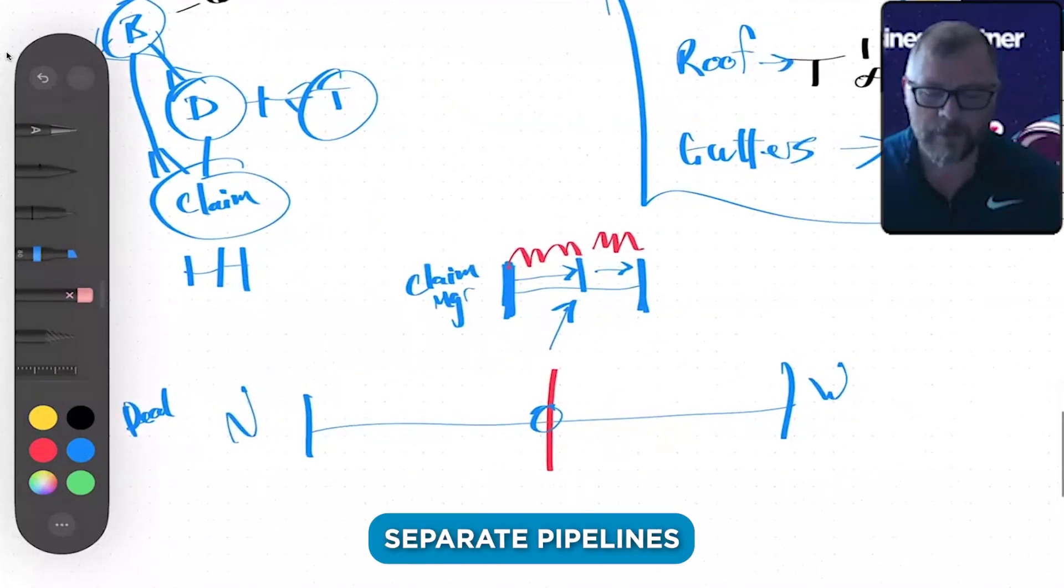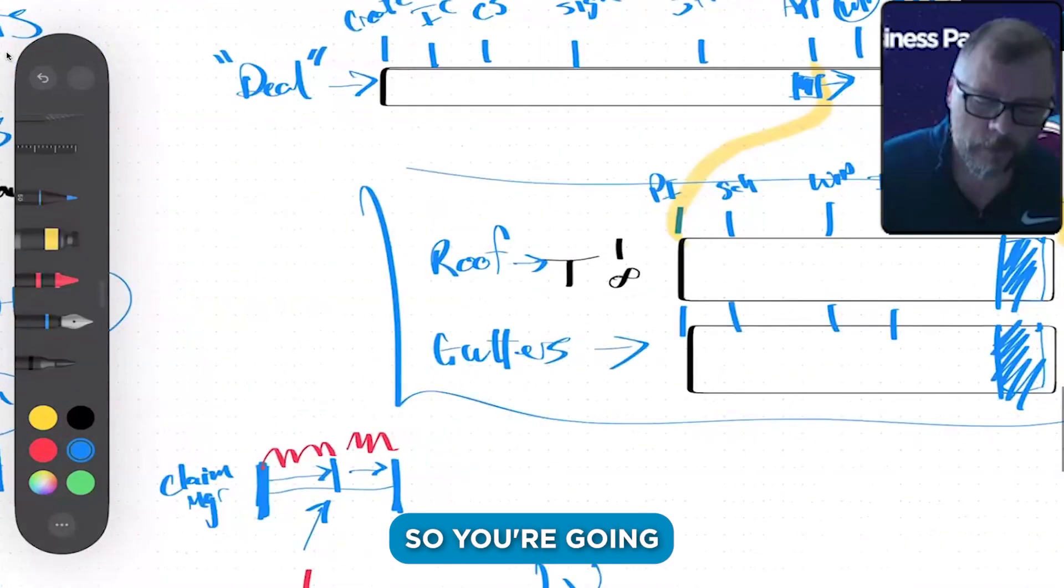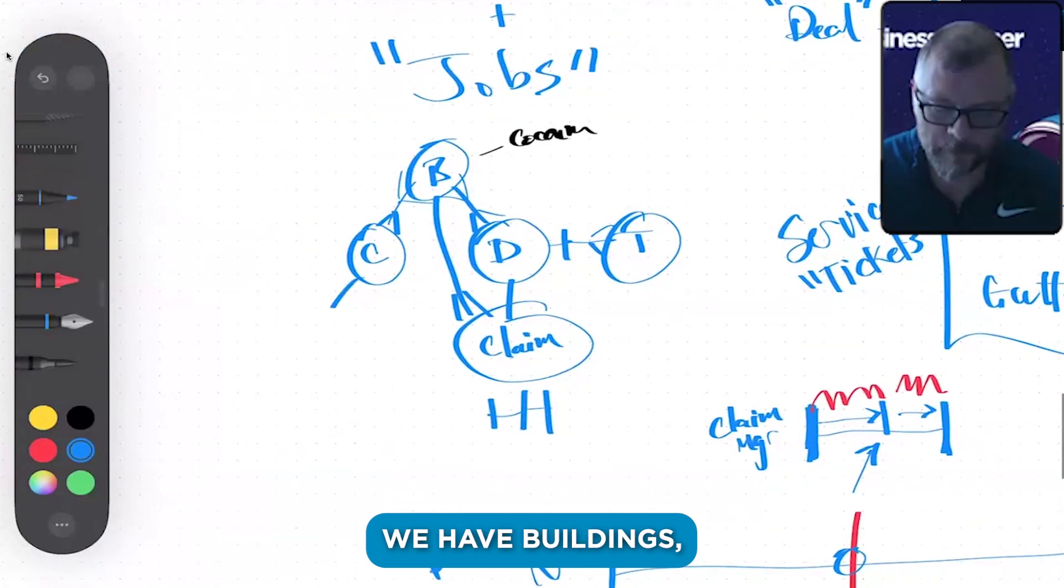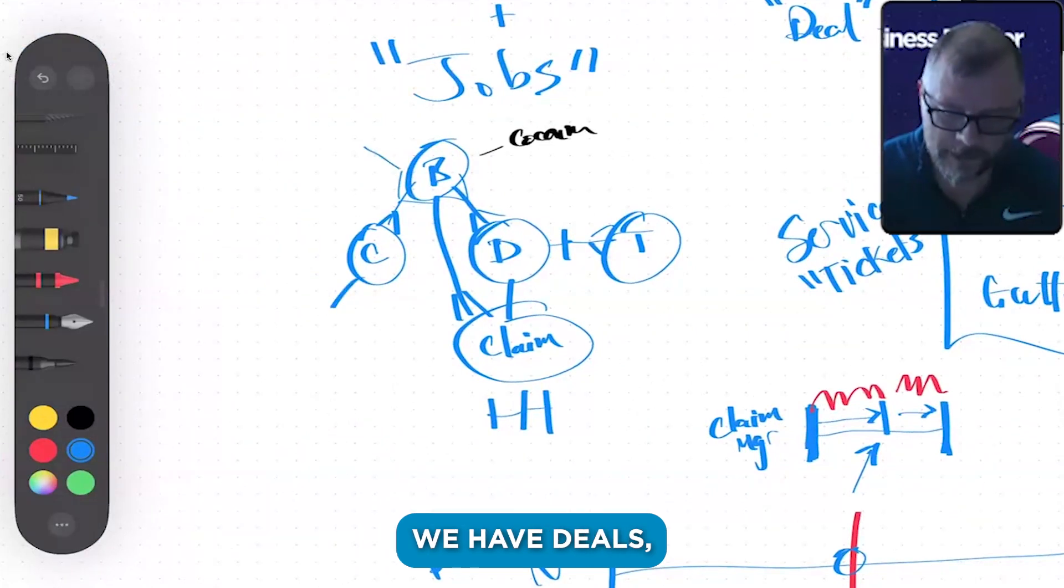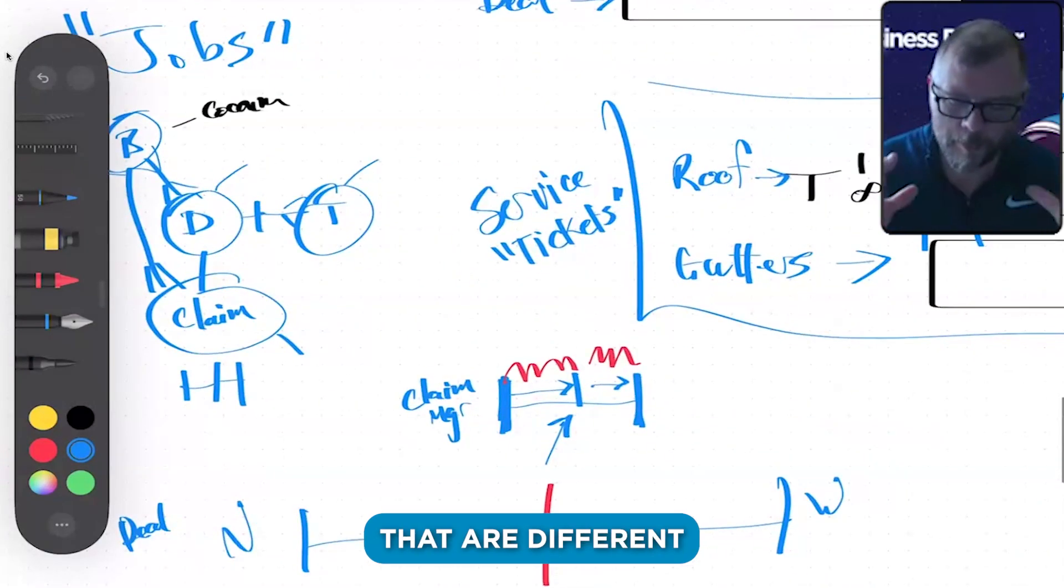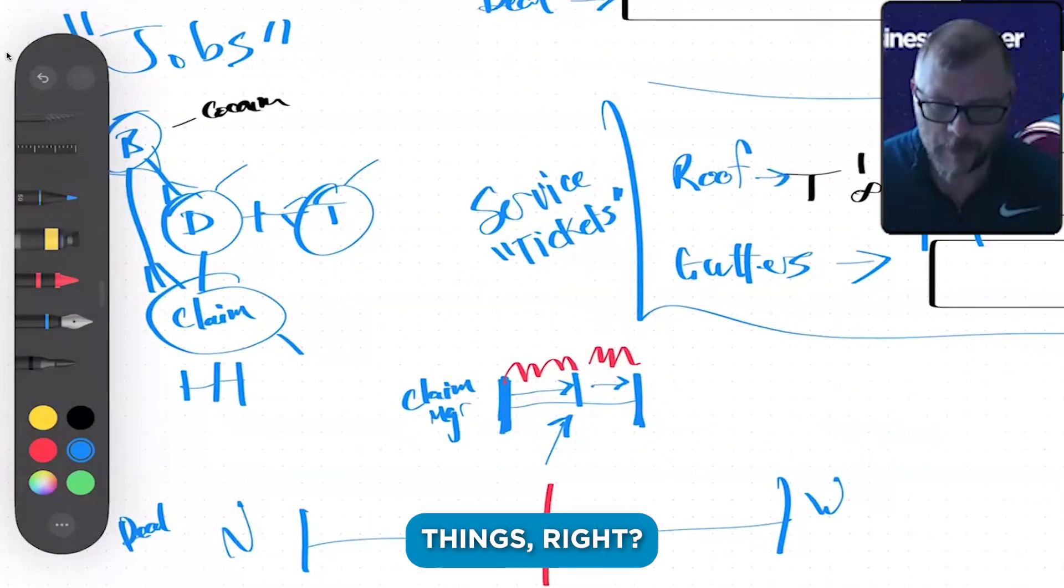You're going to have the service hub. We have contacts, we have buildings, we have deals, we have tickets, we have claims. So there's different objects that are different things.